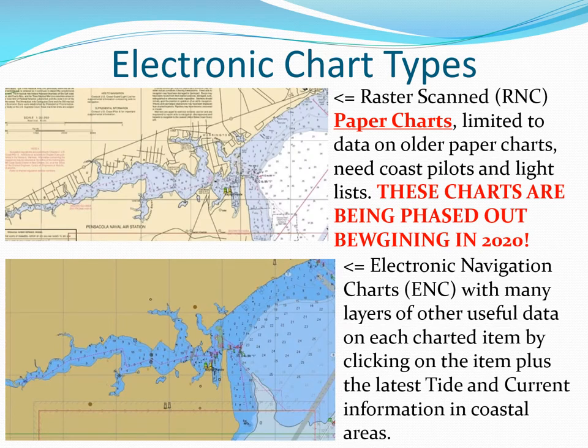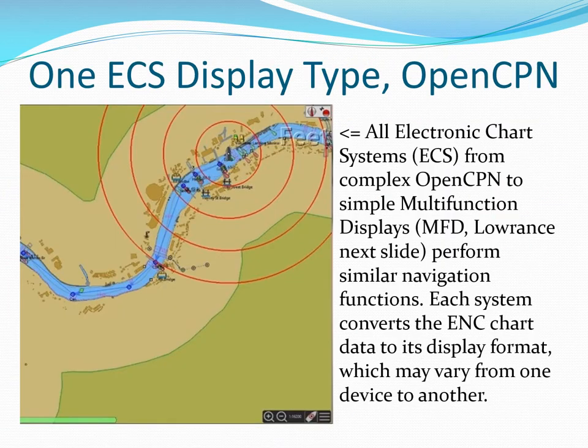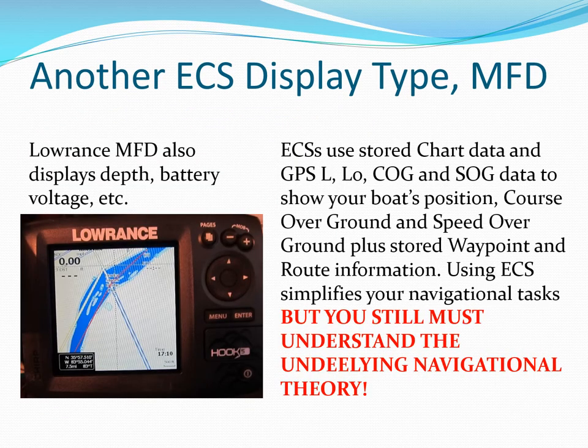RNC and paper charts contain much less information and they're being phased out beginning in 2020. We should be using ENCs whenever possible. All electronic charting systems convert electronic chart data to useful images with GPS ship data overlaid. All electronic charting systems provide similar assistance functions, but the displays may be very different and you need navigation training to use all of them.